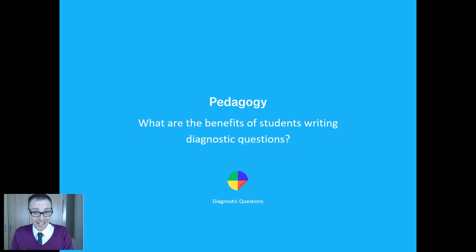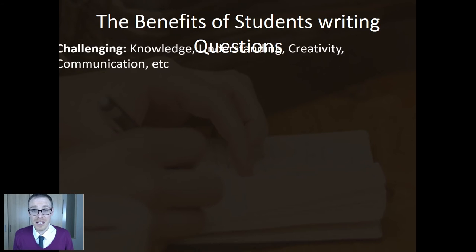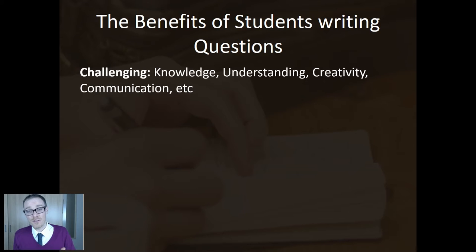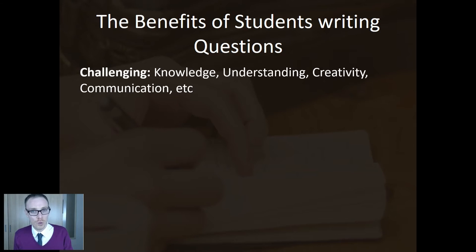And she went at it and she found it really hard — but it was perfect. It was an ideal way to challenge Josie, because that's the first major benefit of students writing questions: they're challenging. Think of the skills involved to write one. You've got to know your topic. You've got to understand not just how to get the right answer, but where the wrong answers come from. You need a bit of creativity. You've got to be able to communicate why you've chosen each of the wrong answers. It's testing everything. Josie found it really hard, but really, really beneficial.